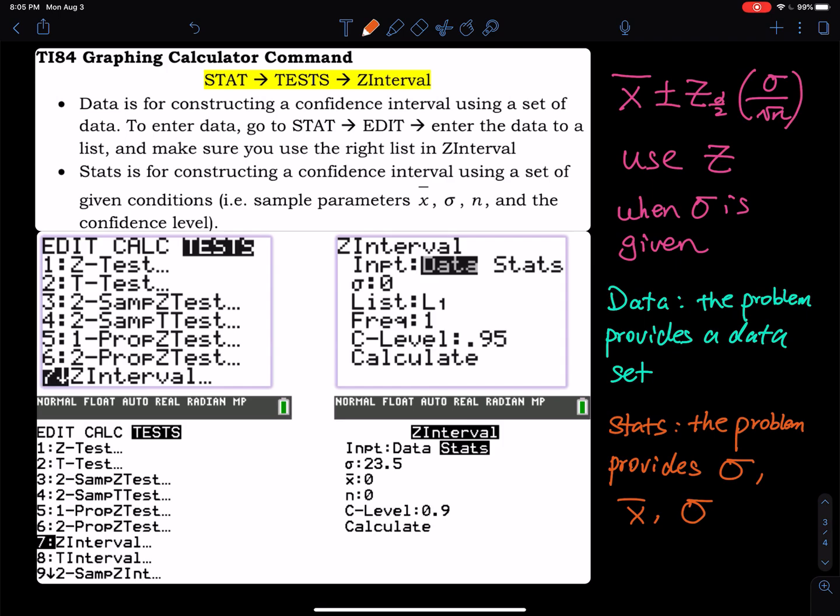When do you use t? You use t when sigma is unknown. You have to read the problem. The problem will either give you sigma or say sigma is unknown. If you don't know sigma, use t. If you have sigma, use z.